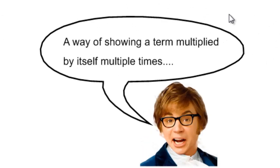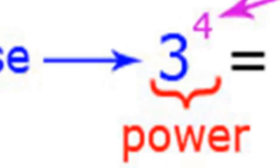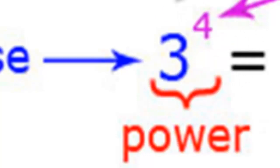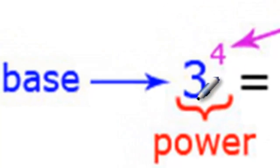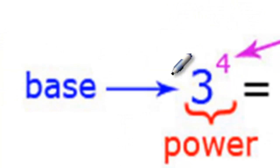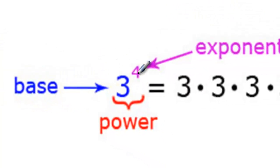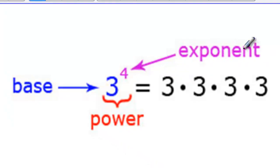A power is a way of showing that a term is multiplied by itself multiple times. Powers have a few pieces. If I look at 3 to the exponent 4, the whole thing together is considered the power. The number 3 is the base of the power and the number 4 is the exponent of the power.